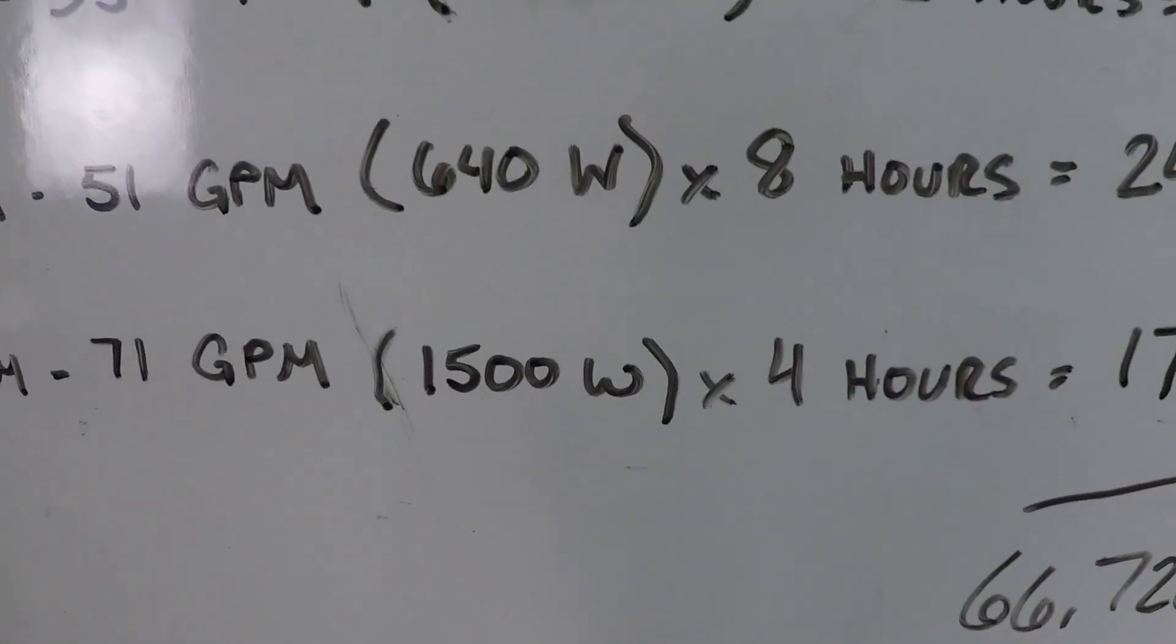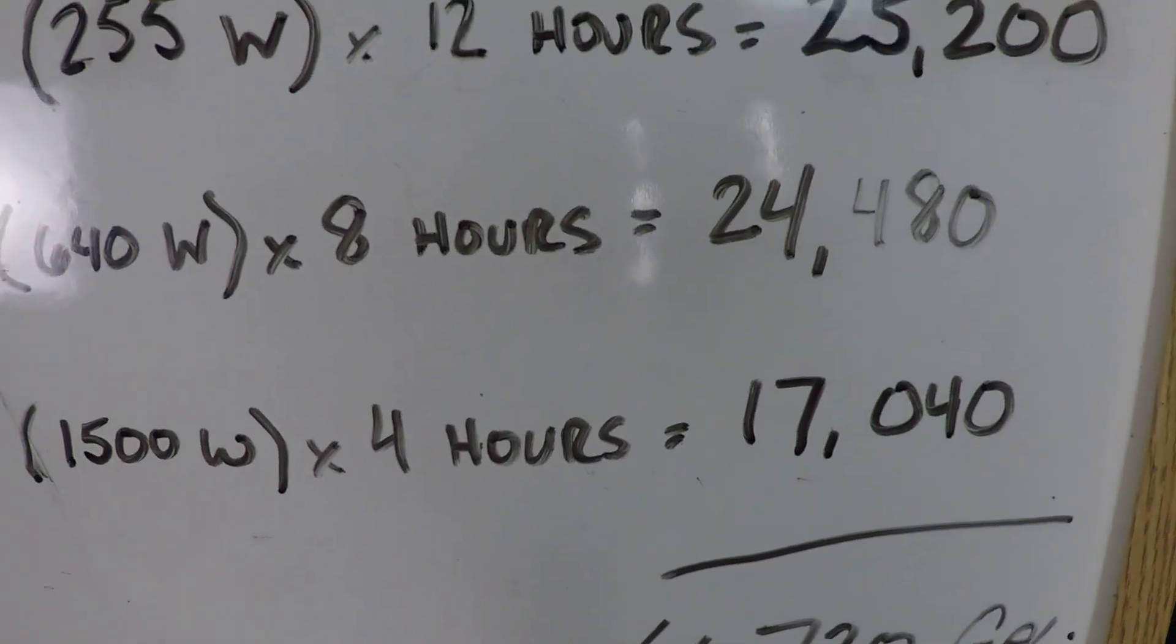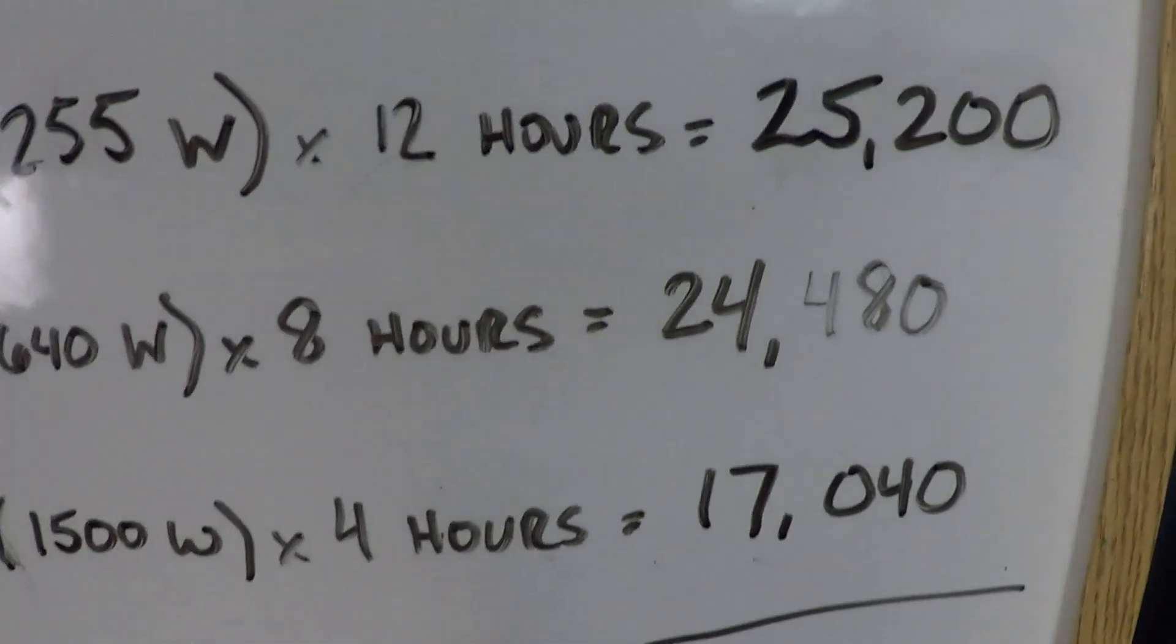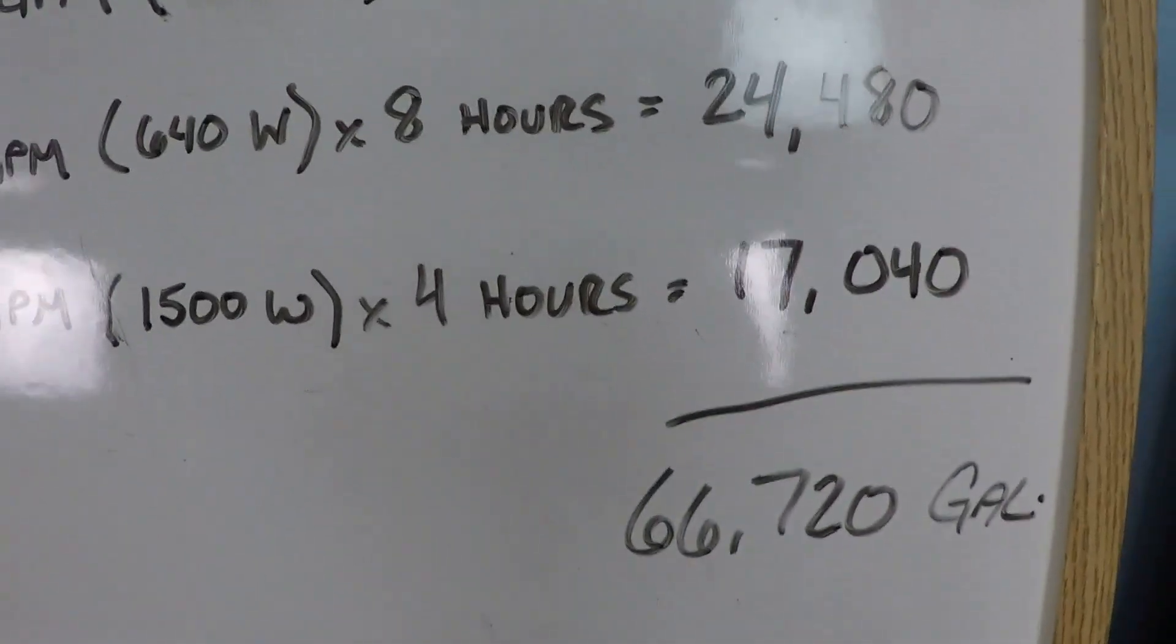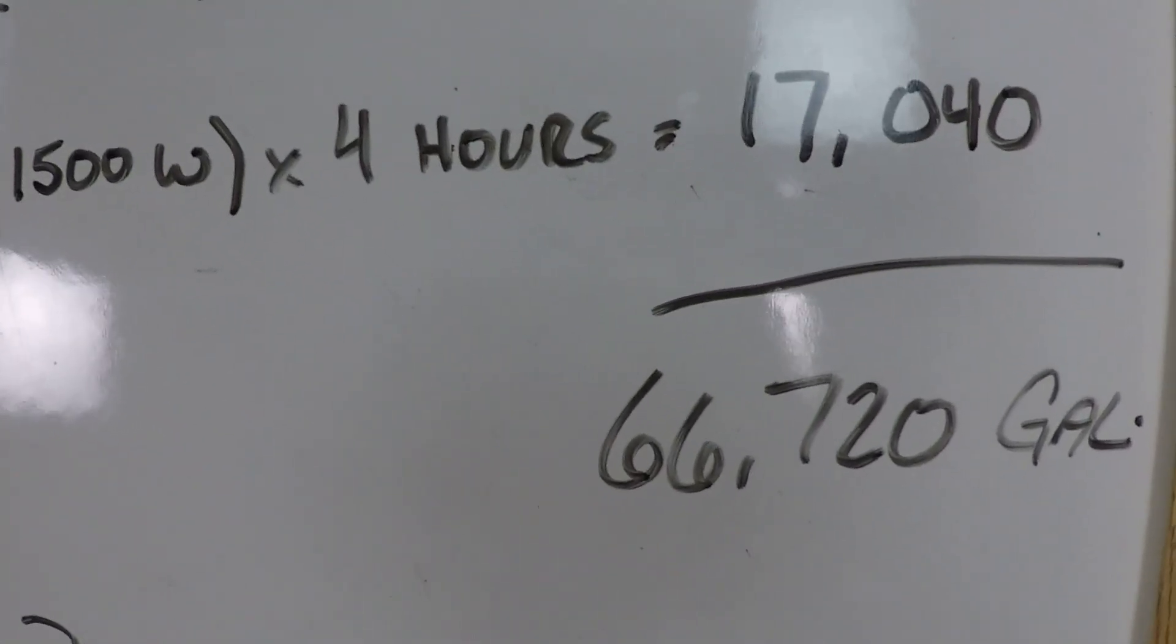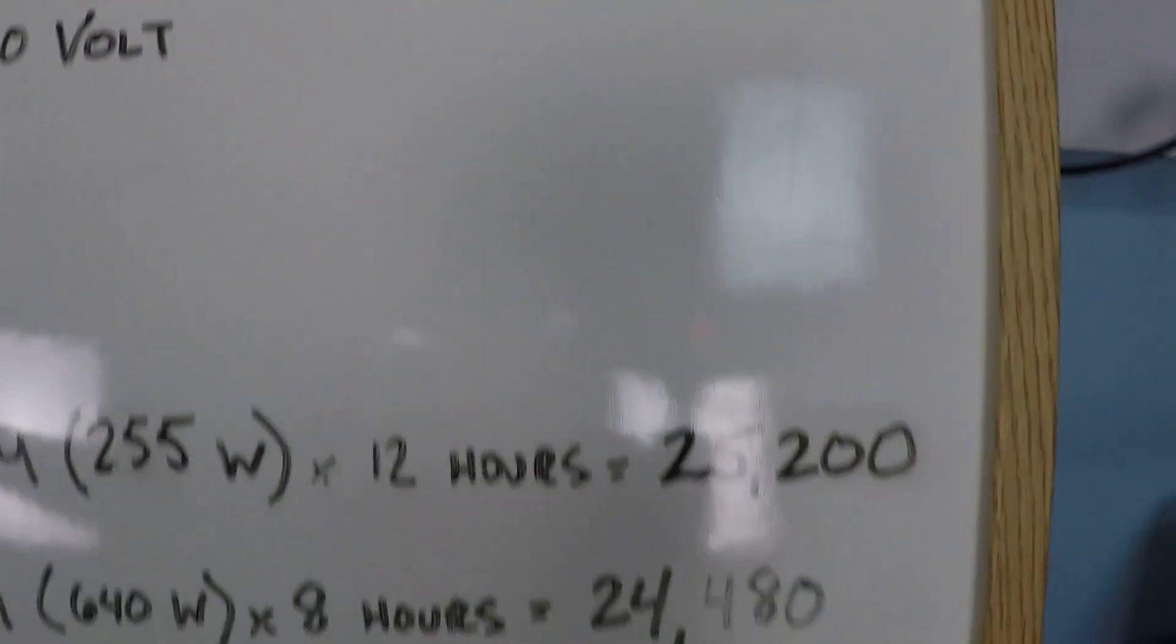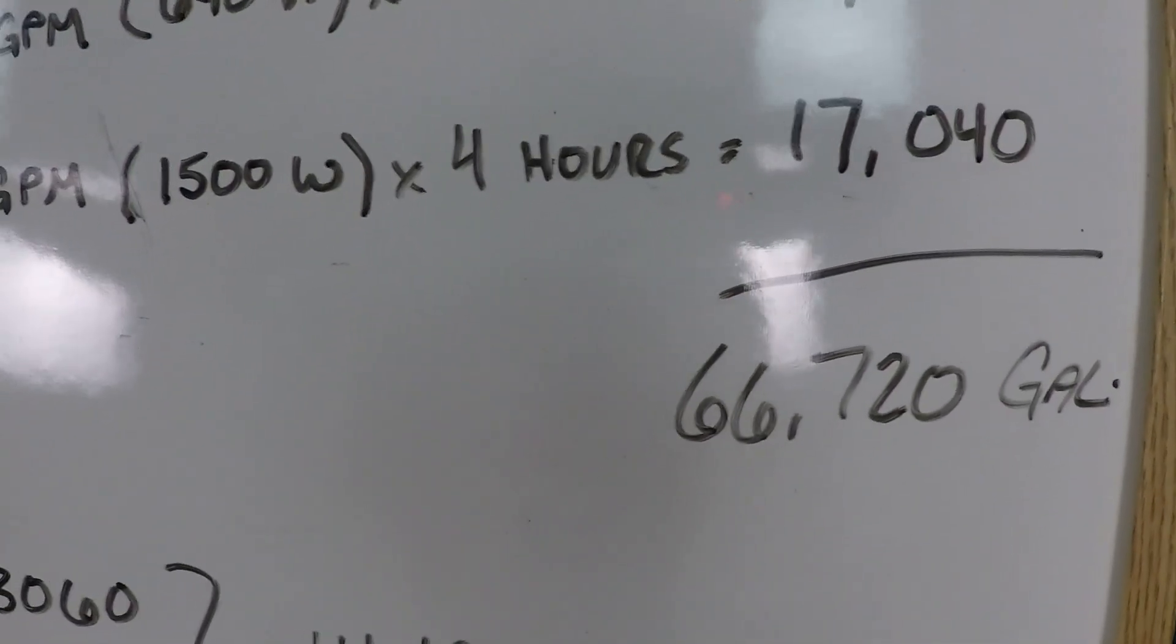So four hours at that high speed is going to get us 17,040 gallons. At the end of this cycle we'll have achieved 66,720 gallons of filtered water. Our goal was 65,610, so that is mission accomplished with 66,720 gallons of filtered water.